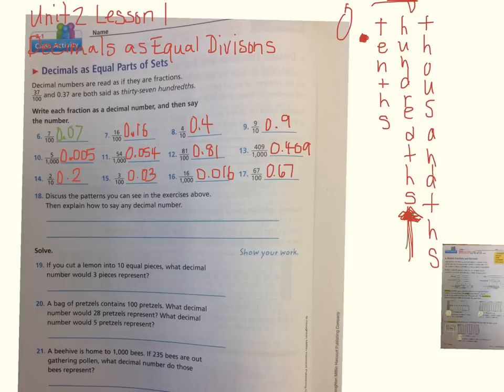Sixty-seven hundredths, sixty-seven cents, sixty-seven hundredths, sixty-seven pennies. Are you seeing any patterns there?